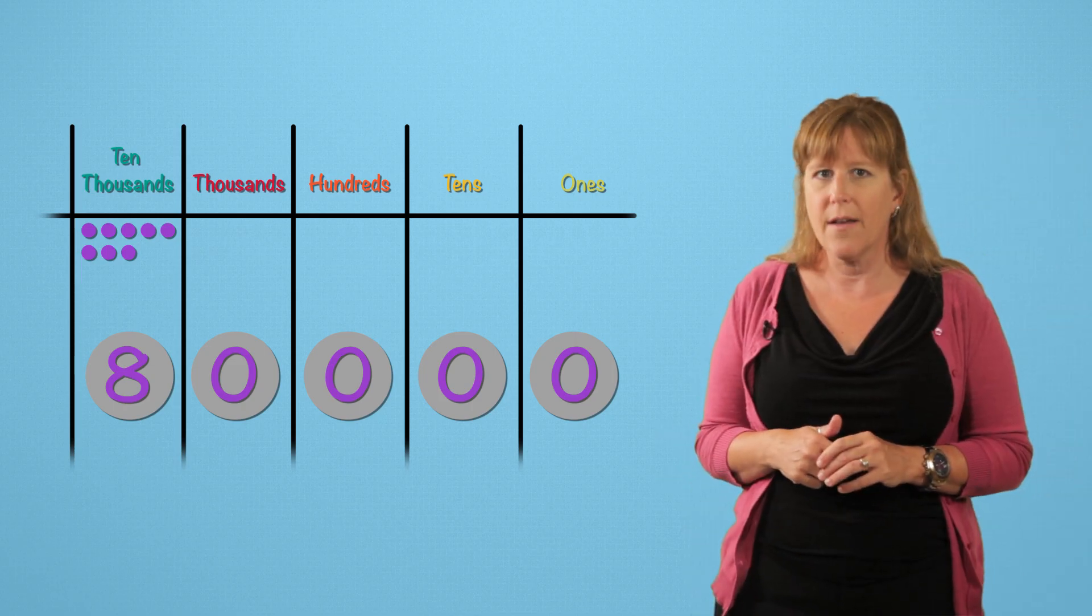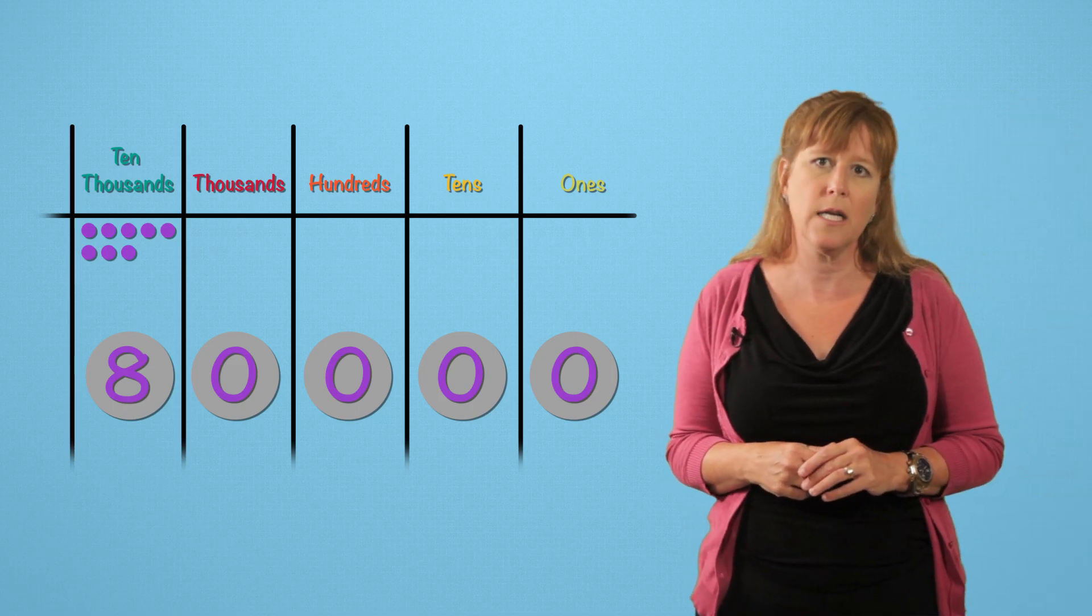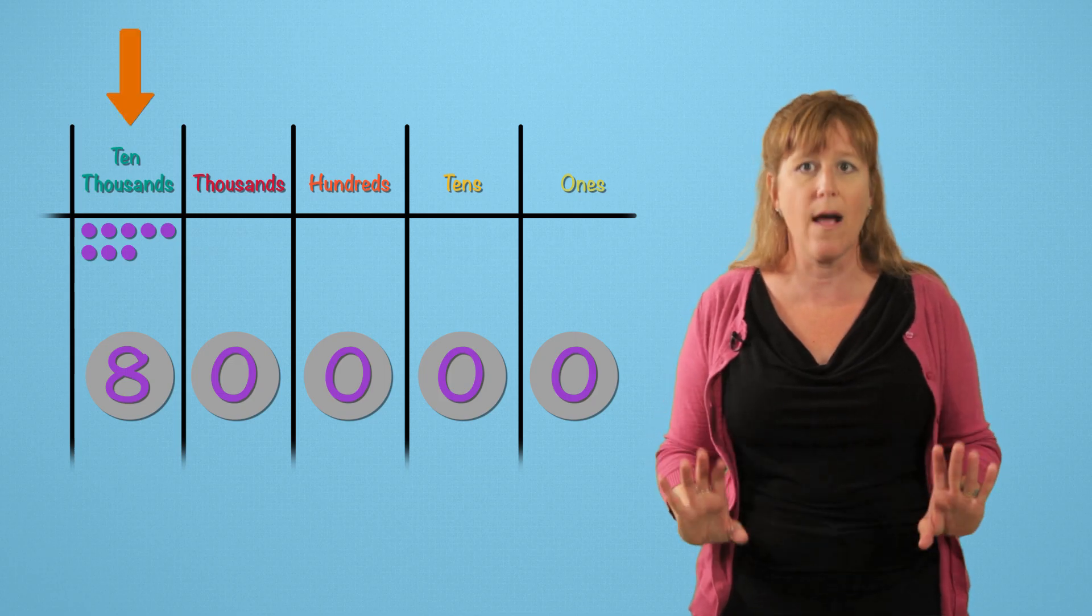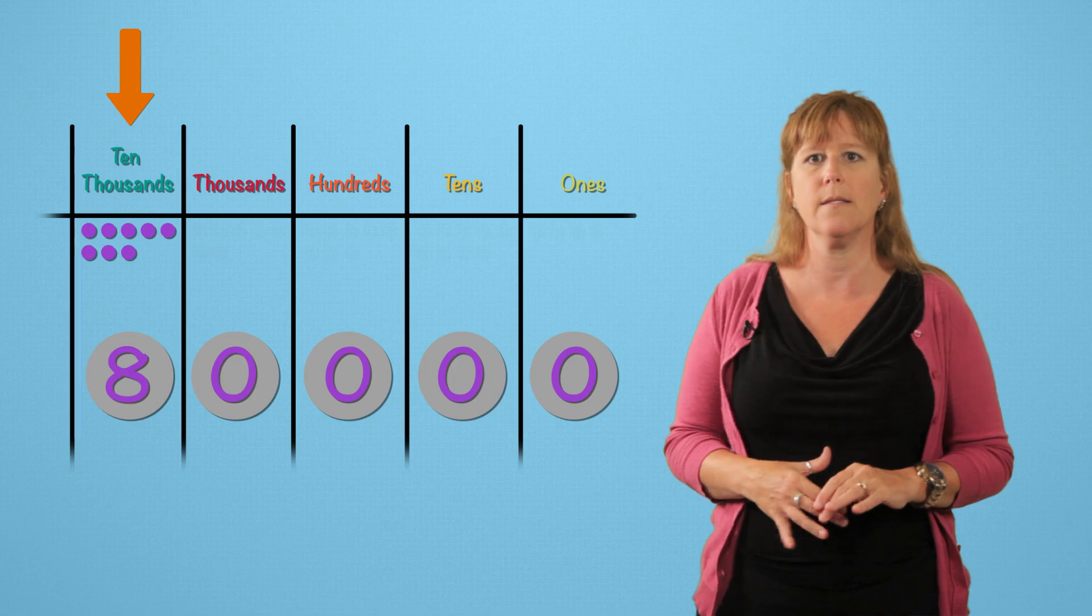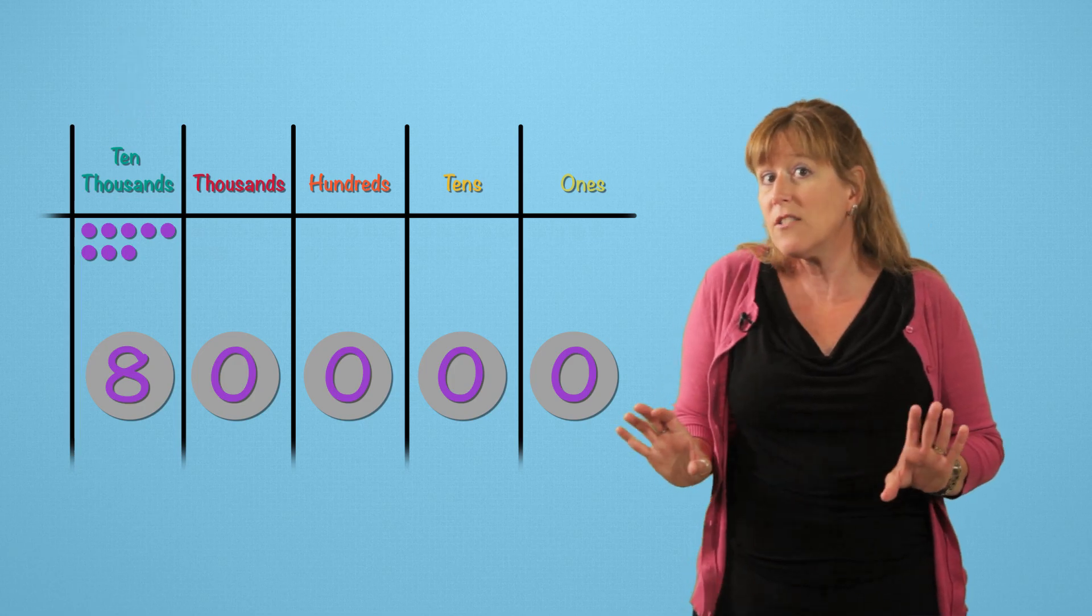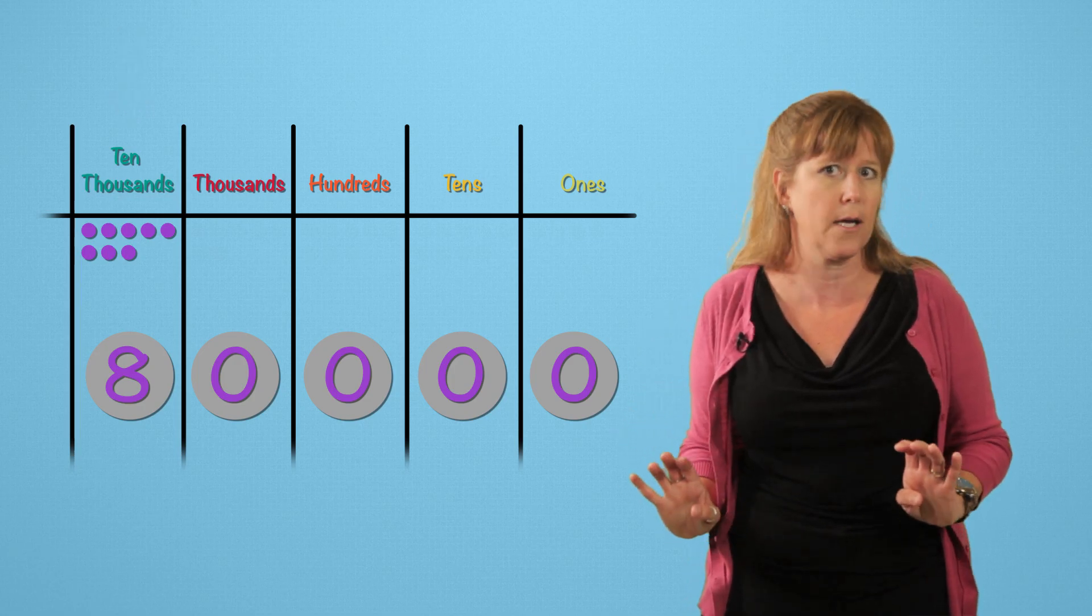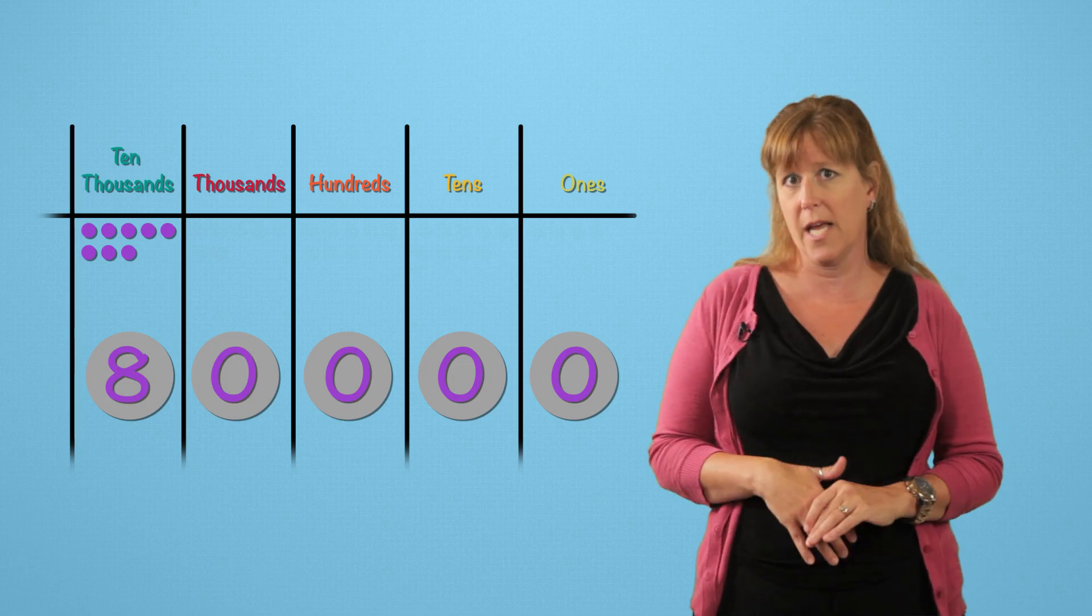I rounded 77,894 to the nearest ten-thousands place. Largest place value, simplest number. But now let's try being more specific. Let's round to the thousands place.